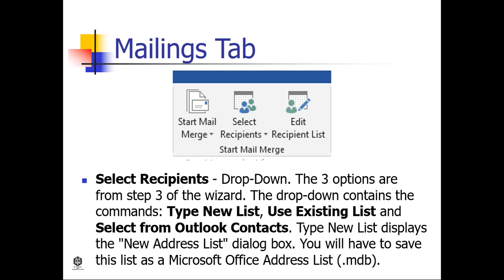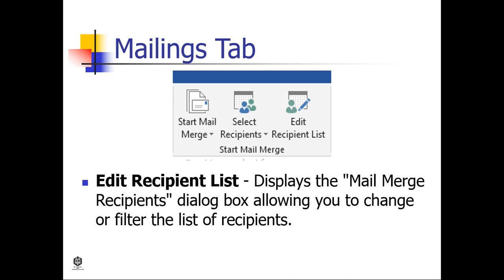The Select Recipients drop-down contains three options. From step 3 of the wizard, the drop-down contains the commands: Type New List, Use Existing List, and Select from Outlook Contacts. Type New List displays the New Address List dialog box; you will have to save this as a Microsoft Office Address List (.mdb).